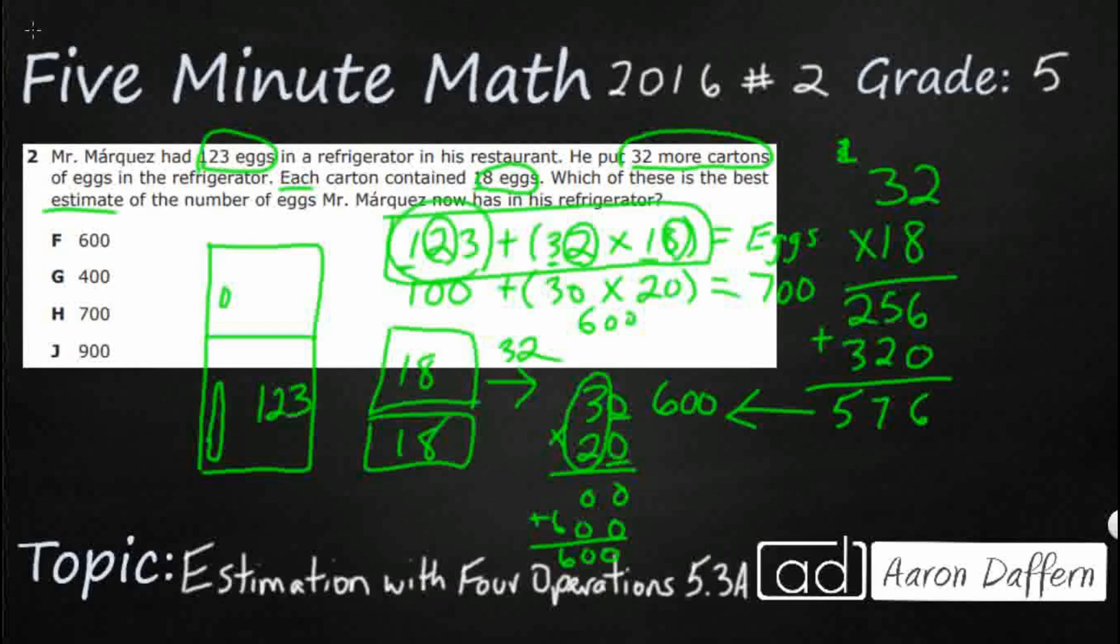Now, what we need to do is we need to add our 123 back in, let's see what the actual answer is. 123, that's going to be 9, 9, look at that, holy cow. 700 was the estimated answer, we got 699 as the real answer, that is literally one away. So yes, 700 is our good answer, we're going to go with H.